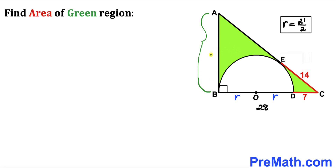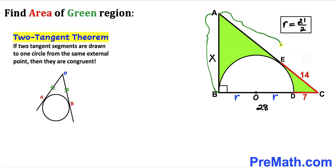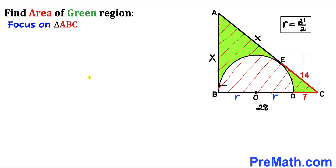Label side AB as X units. By the two-tangent theorem, if two tangent segments are drawn to a circle from the same external point, they are equal. Since B and E are points of tangency, segment AB equals segment AE. So if AB = X, then AE = X as well.